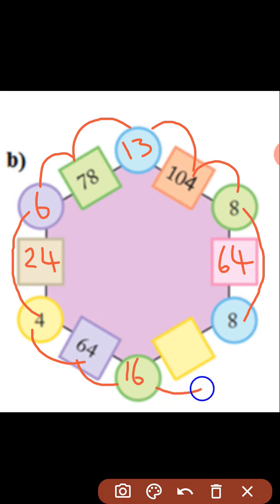Finally the last one 16 and 8 if you multiply you are getting 128. Hope you have understood how to fill the empty spaces in magic hexagon. Thank you children.